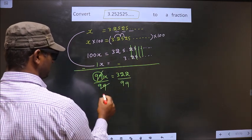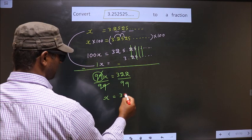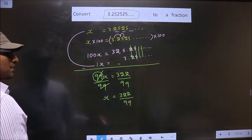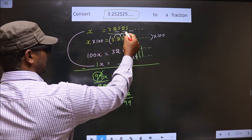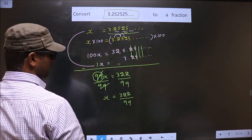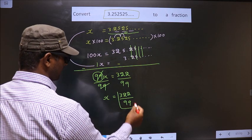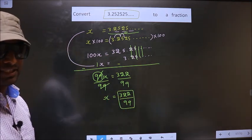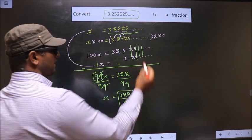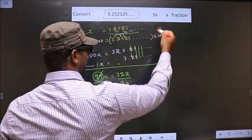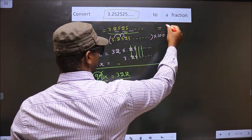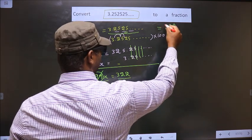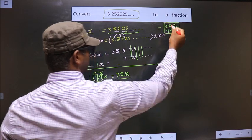So now this cancels out. You get x equal to 322 by 99. Now earlier we had taken the recurring decimal to be x. Now we got the fraction equal to x. That implies only one thing: that this recurring decimal equals the fraction, so it equals 322 by 99. So this is our answer.